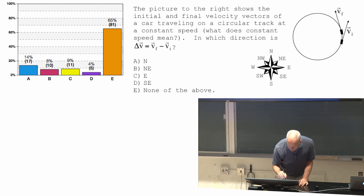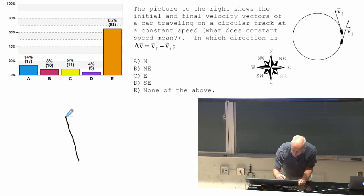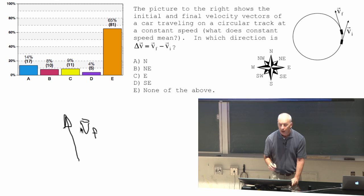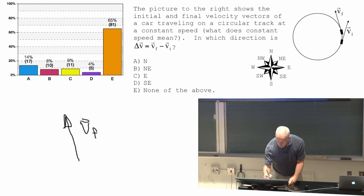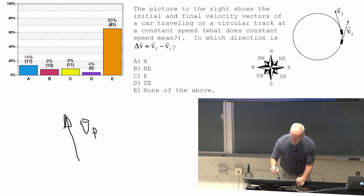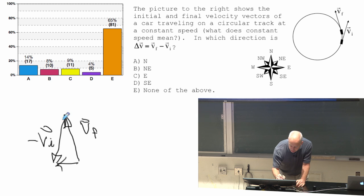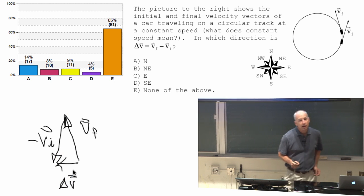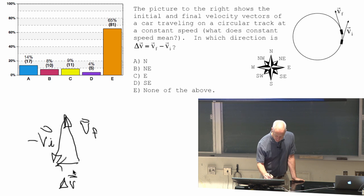How do you know? If you take v-final, add it to negative v-initial. v-initial is north and to the east. Negative v-initial is south and to the west. If you take v-final, add negative v-initial, you get delta v, which is to the west, directly left.